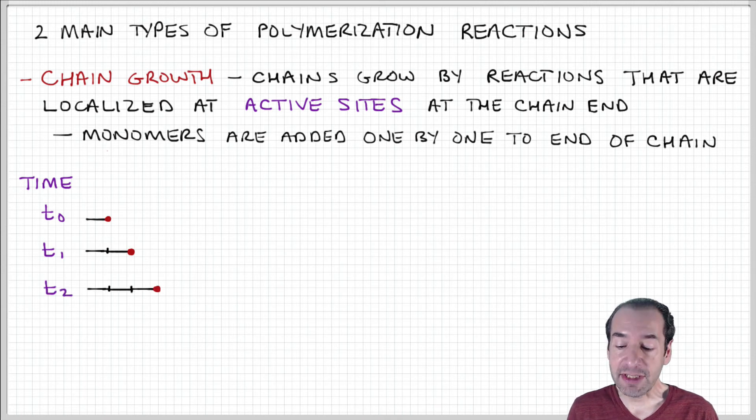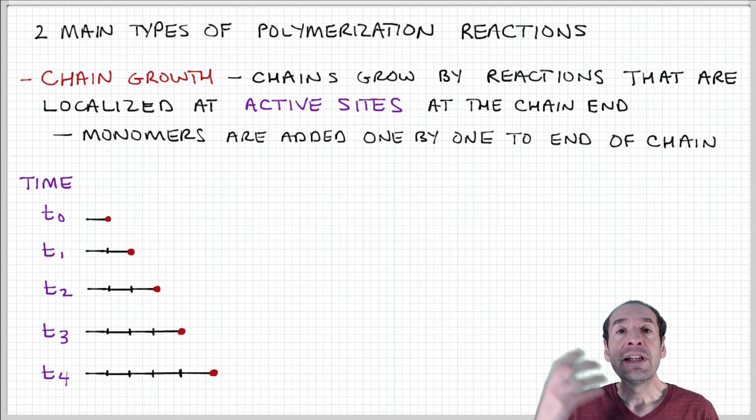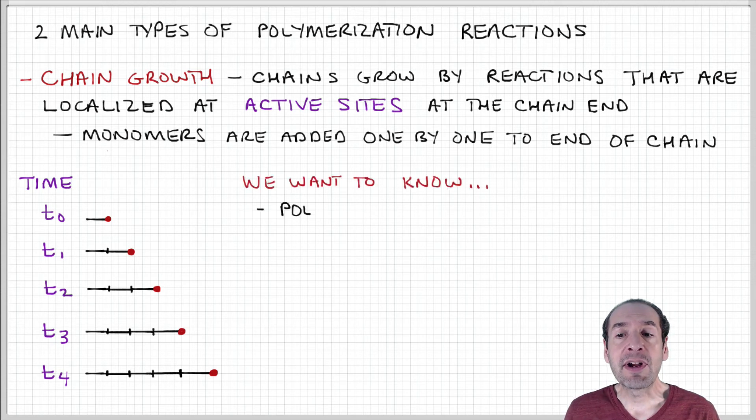At each subsequent point in time, monomers are added one by one onto the end of the chain. You can see this is a little bit different because, in contrast to step growth, we don't have different growing chains combining together to produce intermediate products.